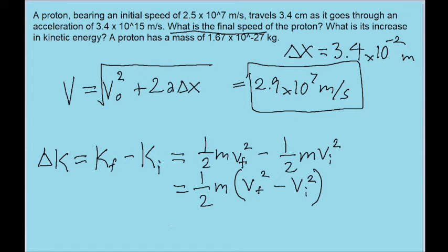And now once again, we just need to do some plugging in here. The mass of the proton is given, and it can also be looked up, as 1.67 times 10 to the power of negative 27 kilograms. The final speed, vf, is what we just found in the first part of the problem. And v initial is given to us as 2.5 times 10 to the power of 7 meters per second.